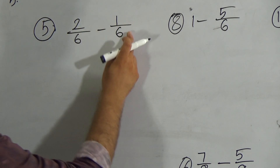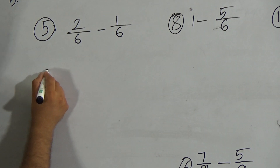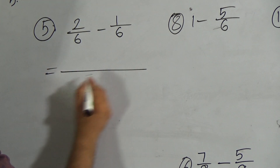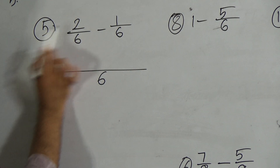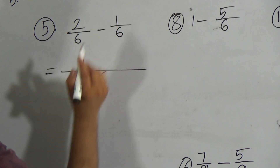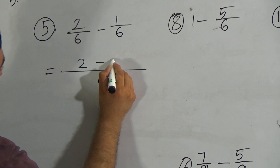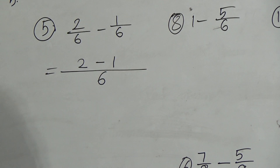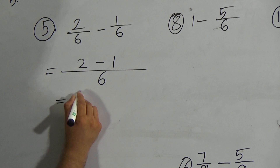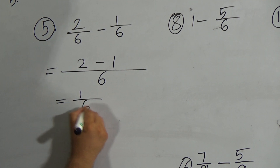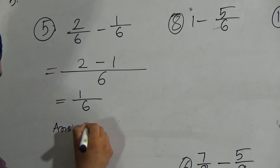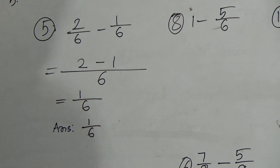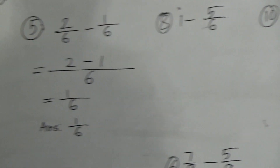Question number 5: 2/6 minus 1/6. Since here is the same denominator 6, write 6 in the second line as denominator. The first numerator is 2, put the minus sign, then the second numerator 1. Subtract 1 from 2 — it will be 1, and the denominator is 6. So the answer will be 1 out of 6. Hope you understood this one.